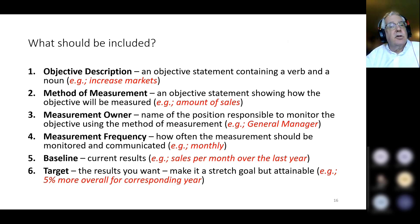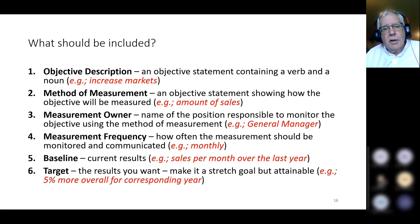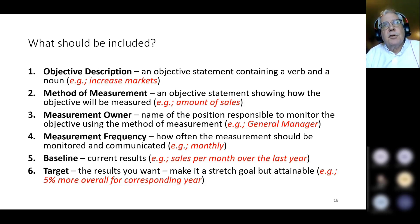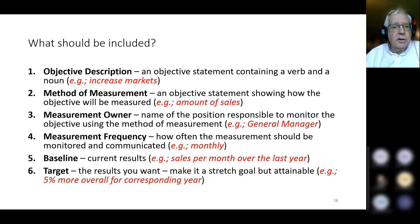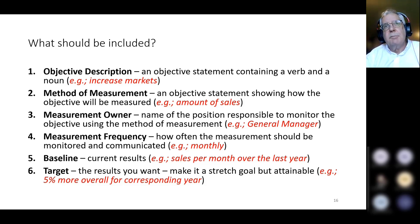What should be included in these objectives? You should have a description and an objective statement — objective means everybody reads it and understands it the same way. You should have a method of measurement — something very easy to measure, such as amount of new markets. You should have a measurement owner — the person responsible for monitoring how well you're doing at meeting the objective. You should have a frequency — how often you monitor or update that measurement. You should have a baseline — where are we right now — and a target — where do we want to be by the time we meet our objective.